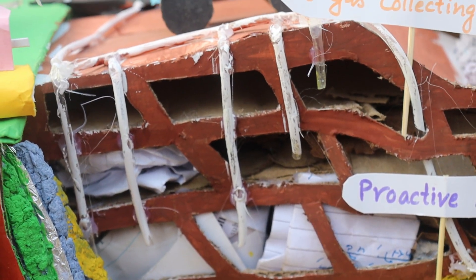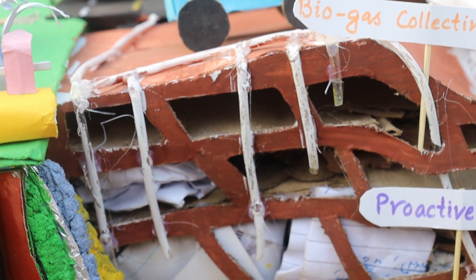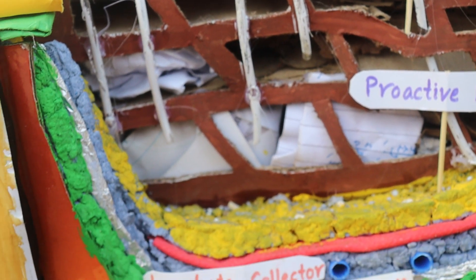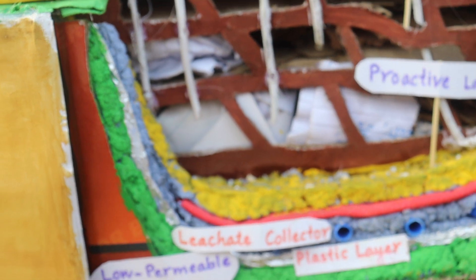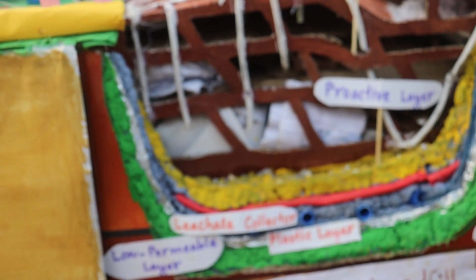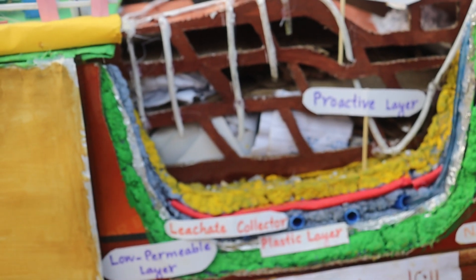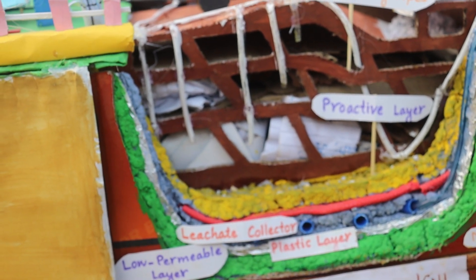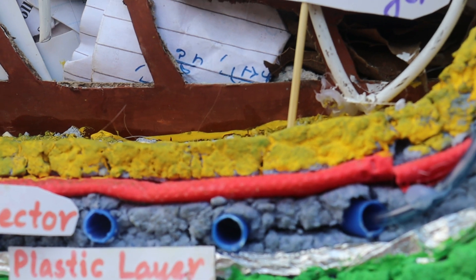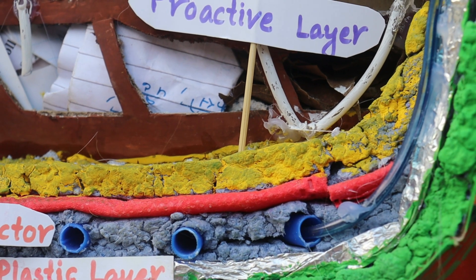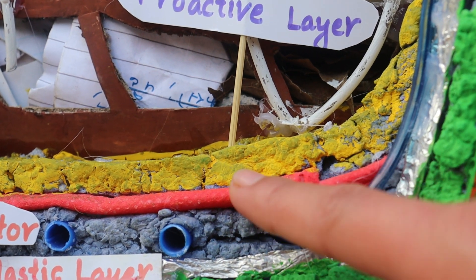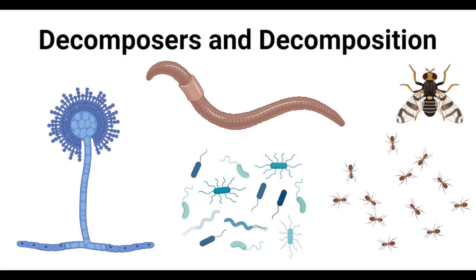Those wastes get collected, then compressed in order to make small cells, which help us to monitor gas and leachate production. These wastes are layered upon a protective layer which consists of different types of decomposers.